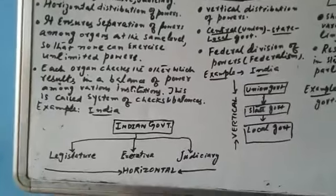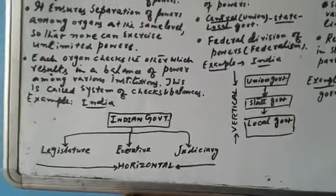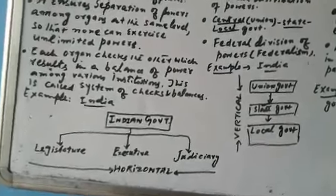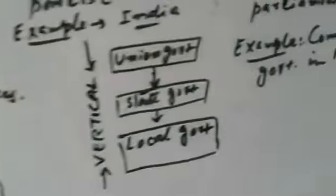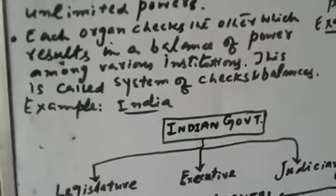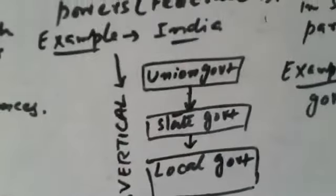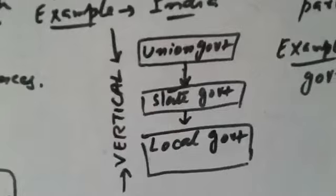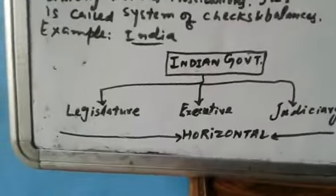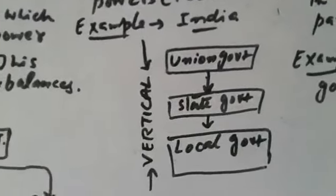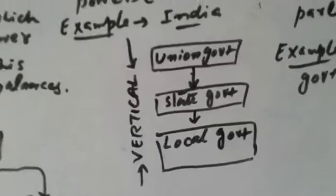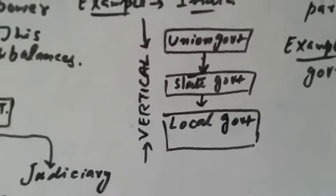To differentiate: horizontal power sharing is where power is shared among different organs of government at the same level — legislature, executive, judiciary. Vertical power sharing is where power is distributed among different levels of government — union, state, and local. In horizontal sharing, each organ checks the other; in vertical sharing, lower organs work under higher organs.